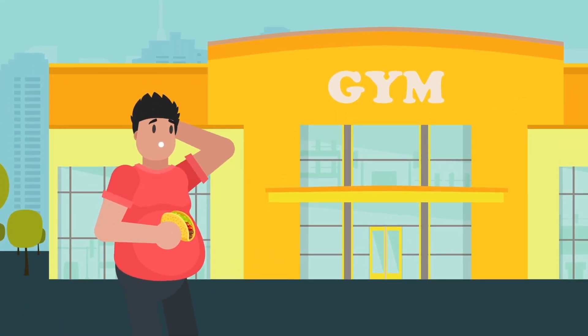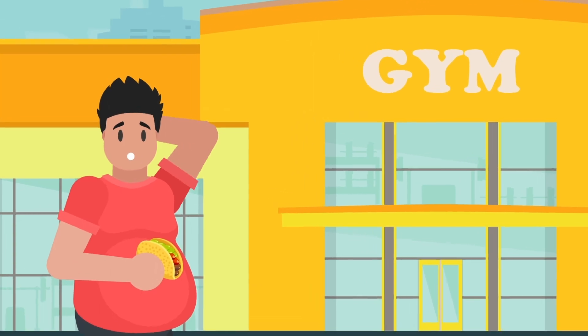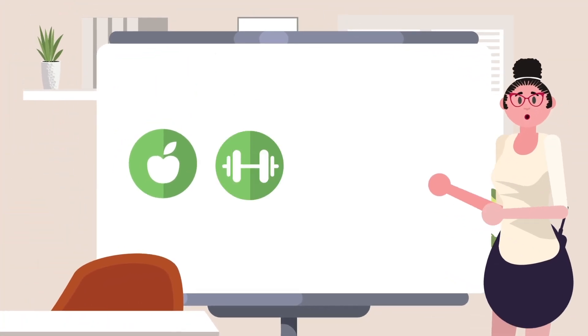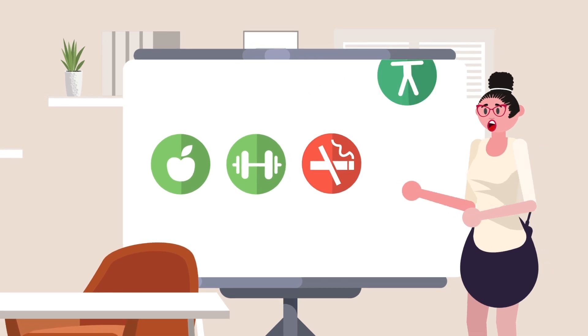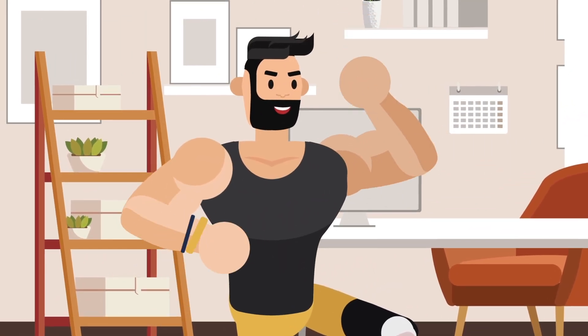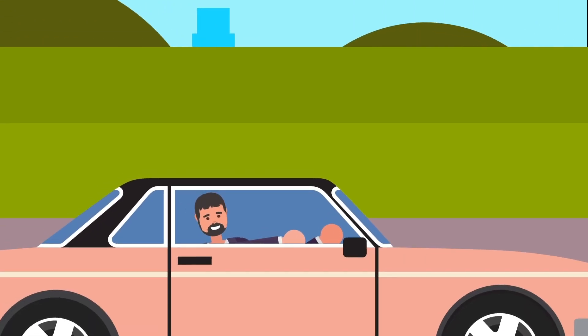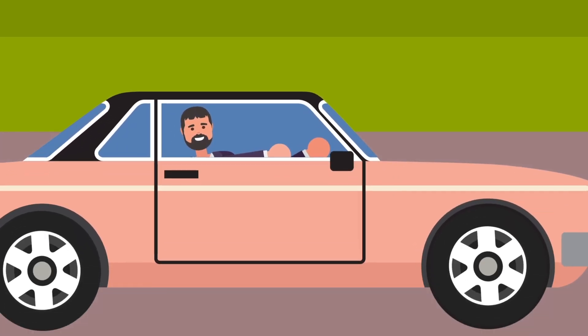Of course, there are plenty of everyday lifestyle decisions that we make that can have a huge impact on our lifespan. Eating a healthy diet, exercising regularly, avoiding smoking, and limiting drinking are all great ways to improve your health and increase your lifespan. Avoiding risky behaviors, and ensuring a safe work environment and safe driving habits can also help.